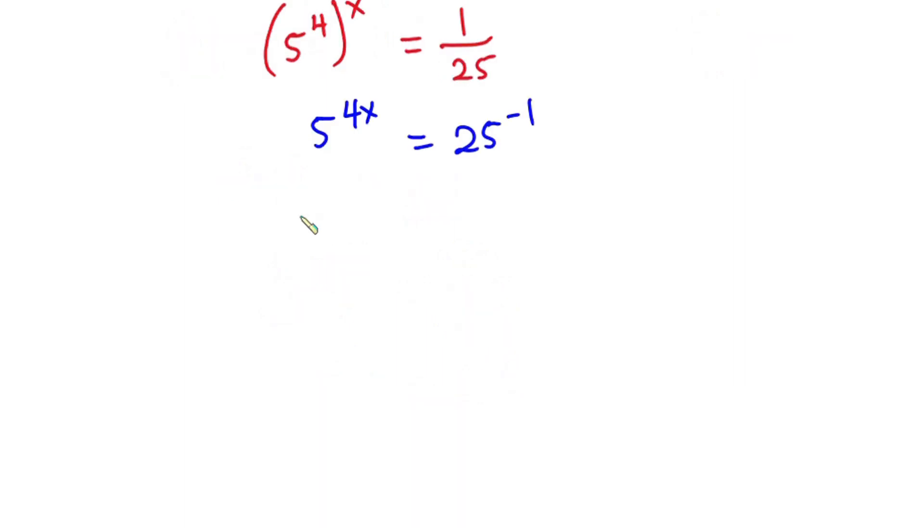Then all to the power negative 1. So we have 5 to the power 4x is equal to... now from indices once again I can multiply this one by this, so we have 5 to the power negative 2.